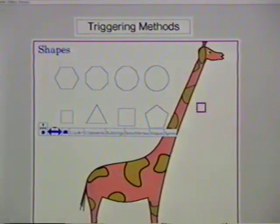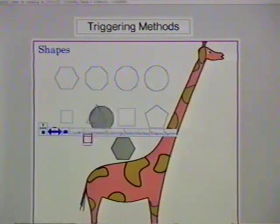See-through tools can be triggered in many ways. For example, this tool, a shape palette, is triggered by pressing down a mouse button over a desired shape, moving the mouse to position the shape, and then releasing the mouse button.